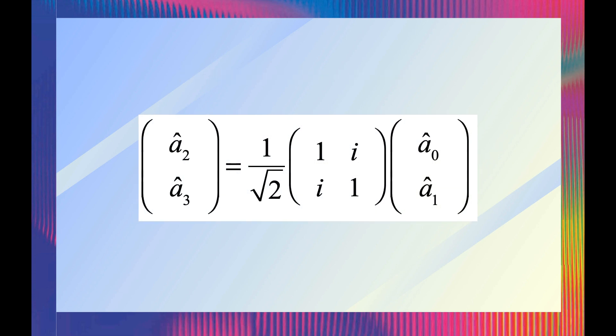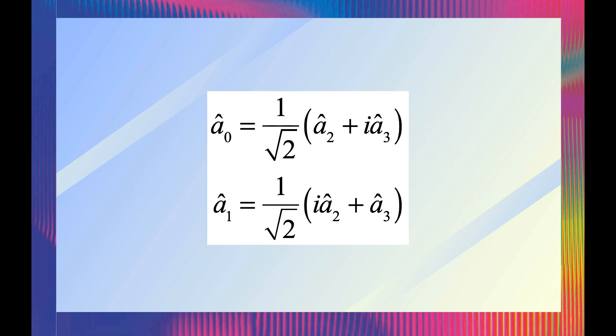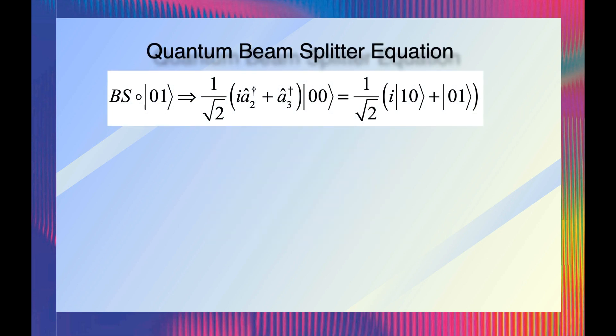The input-output relations for the quantum beam splitter are expressed as linear superpositions of the quantum operators. In this case, A0 is a linear superposition of the output quantum operators A2 and A3. The beam splitter operating on a single photon input converts the input mode creation operator into a superposition of output mode creation operators that generates the following equation.